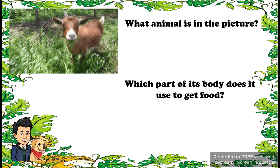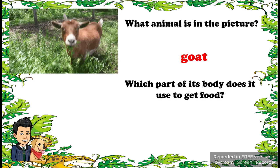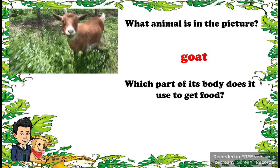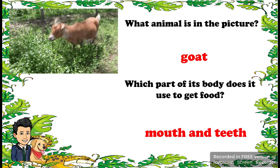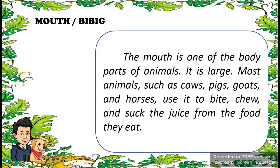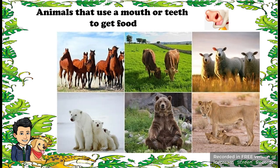What animal is in the picture? It is a goat. Which part of its body does it use to get food? The goat uses its mouth and teeth. The mouth is one of the body parts of animals. It is large. Most animals such as cow, pigs, goat, and horses use it to bite, chew, and suck the juice from the food. Animals that use a mouth or teeth to get food include horse, cow, deer, bear, and lion or tiger.